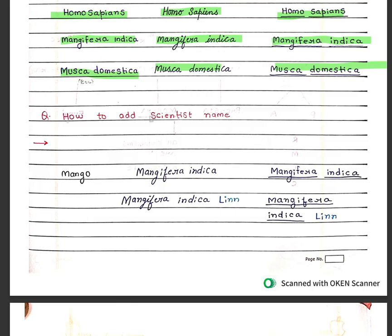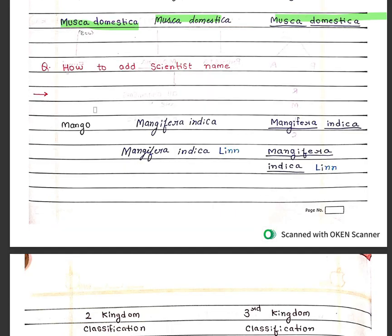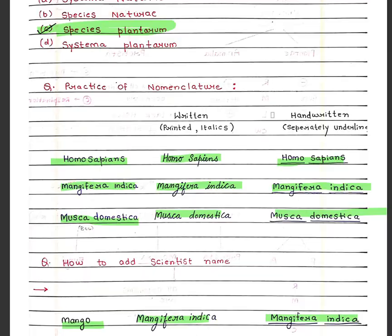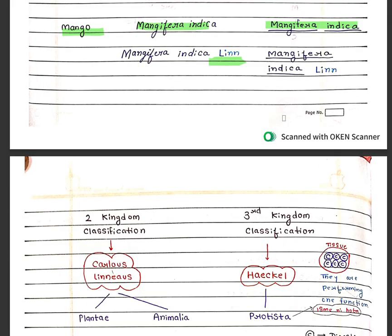Next question: how to add a scientist's name? Mango is known as Mangifera indica, underlined. If we have to add the scientist's name, then it is written after the species name. It was given by Linnaeus, so it is written as Mangifera indica Lin.